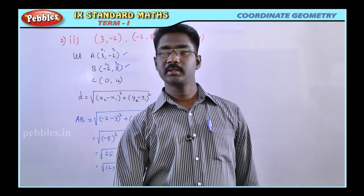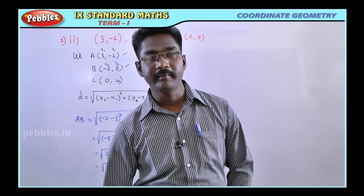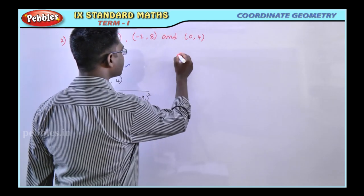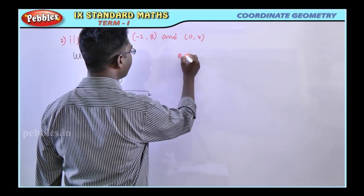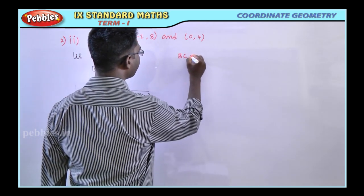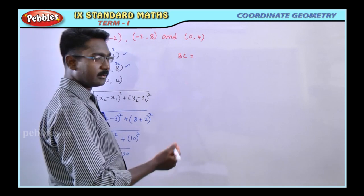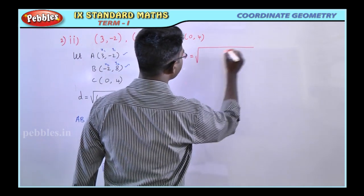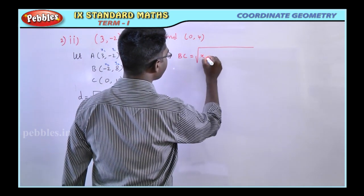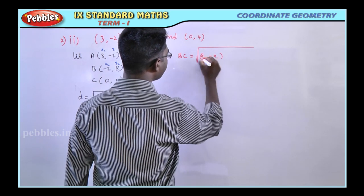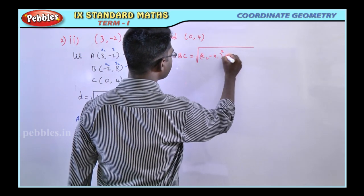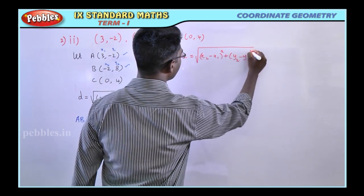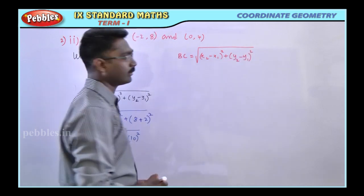So the distance between A and B is √125. Now find the distance between B and C using the same formula: D = √((X2 - X1)² + (Y2 - Y1)²).